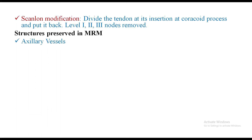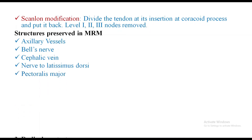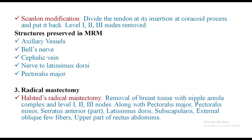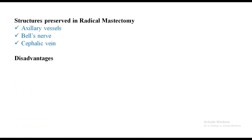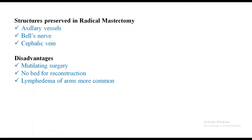Structures preserved in MRM — an important exam question: axillary vessels, nerve to serratus anterior (Bell's nerve), cephalic vein, nerve to latissimus dorsi, and pectoralis major. Radical mastectomy — the classical example is Halsted radical mastectomy. In this, removal of breast tissue with nipple-areola complex, level 1, 2, and 3 nodes along with pectoralis major, pectoralis minor, serratus anterior part, latissimus dorsi, subscapularis, external oblique fibers, and upper part of rectus abdominis. Structures preserved: axillary vessels, Bell's nerve, cephalic vein. Disadvantages: mutilating surgery, no bed for reconstruction, and lymphedema of the arm is more common.